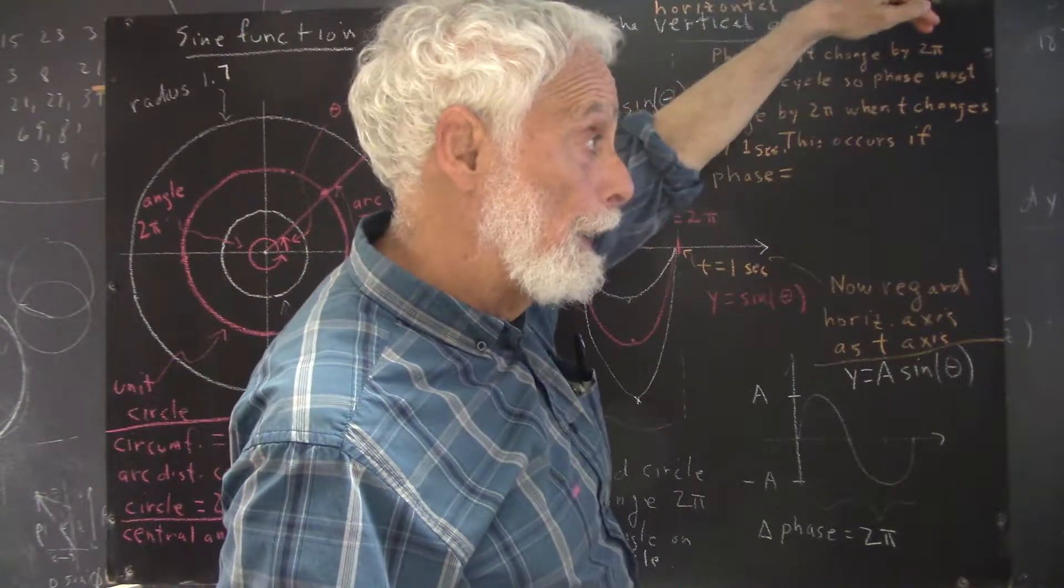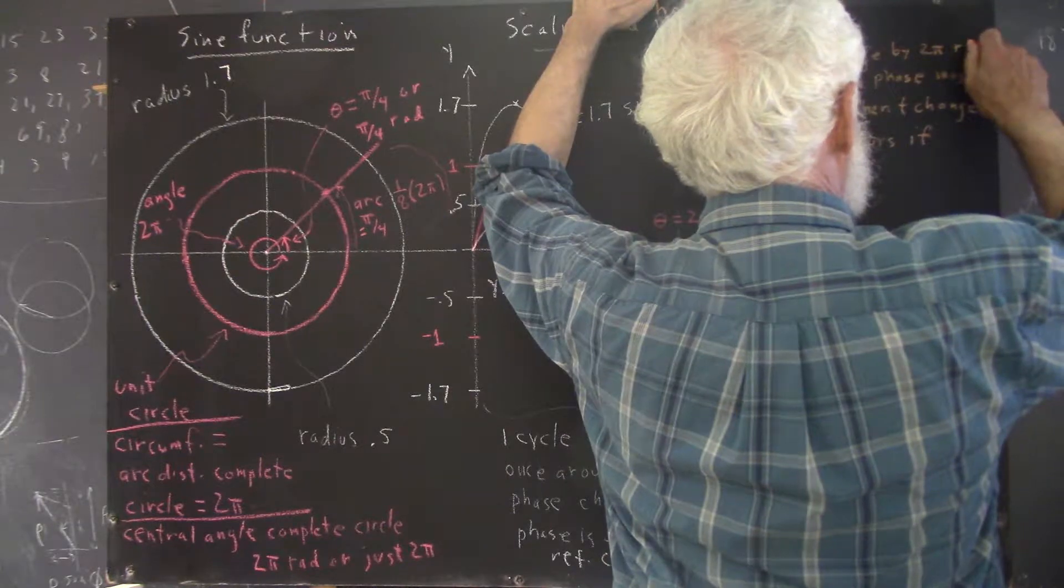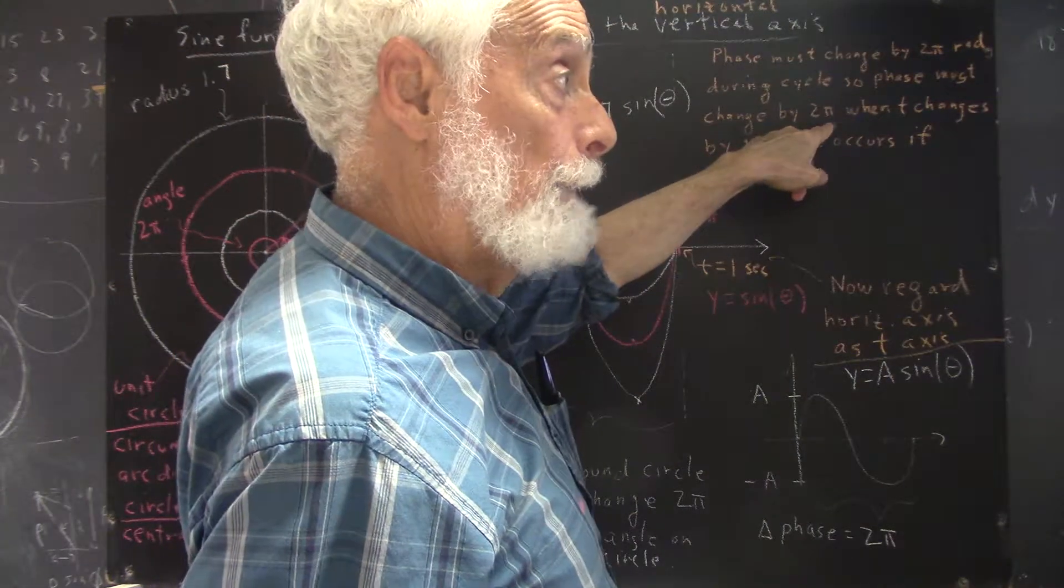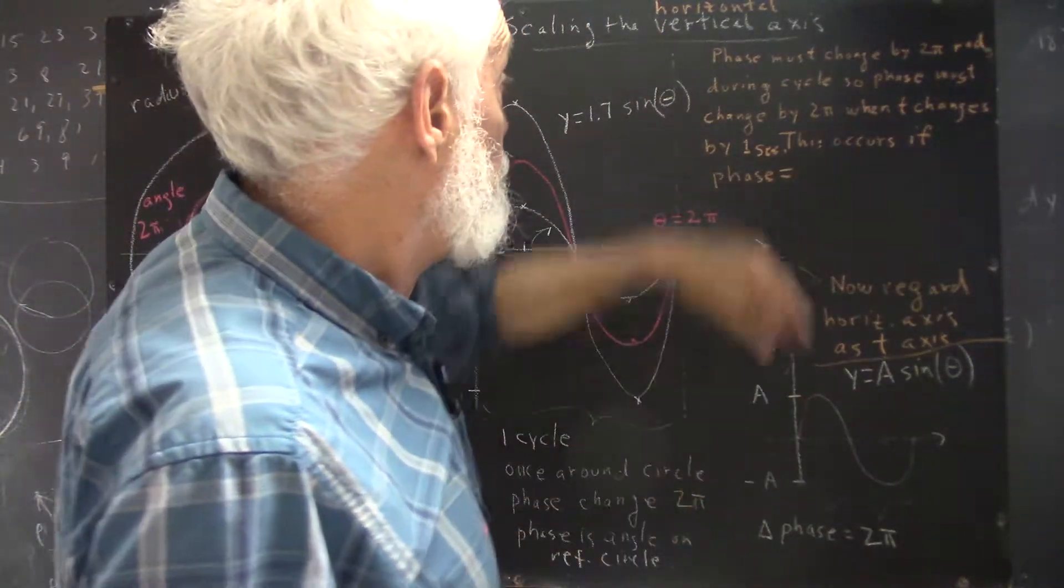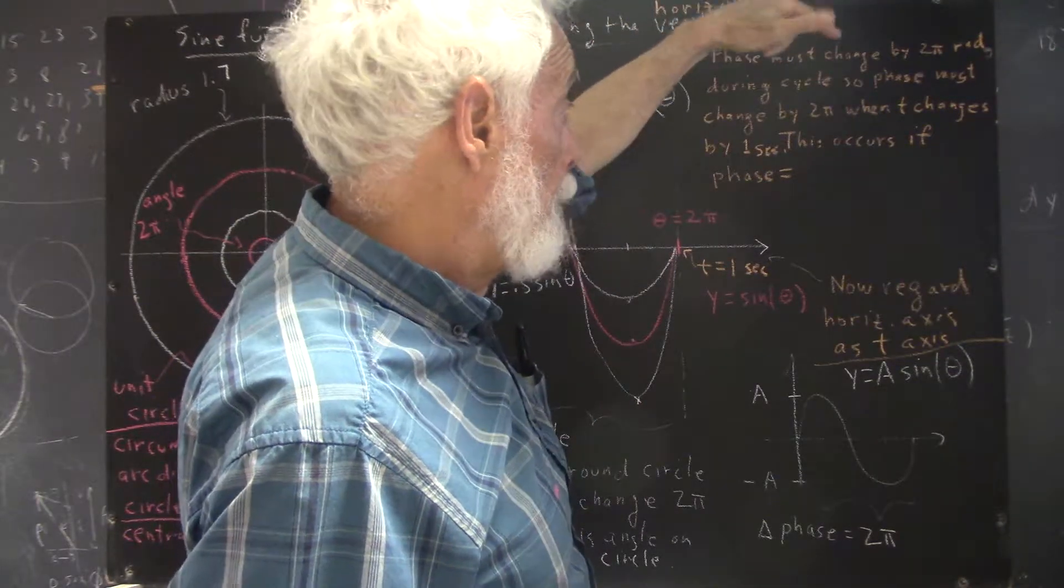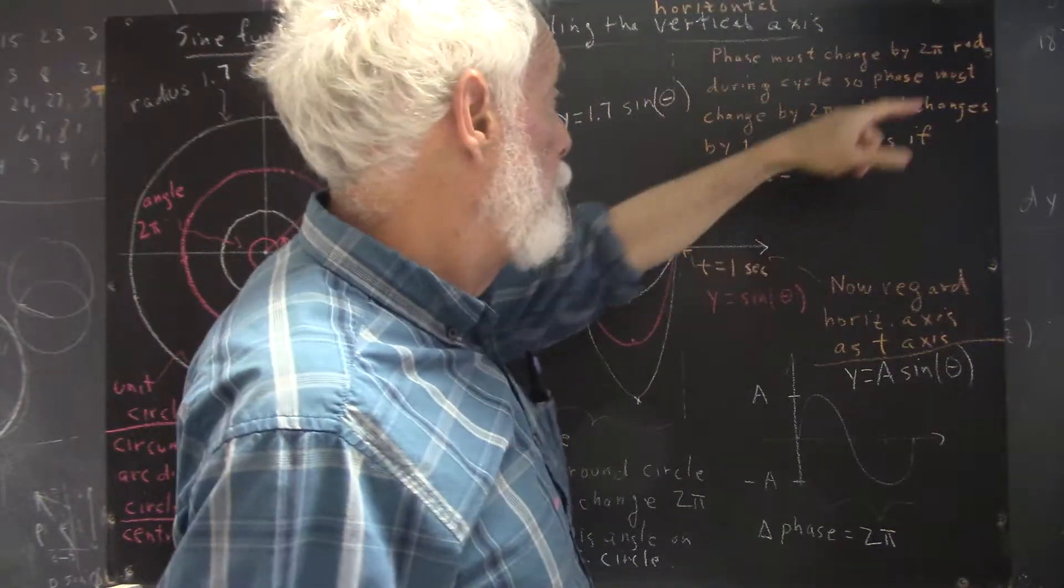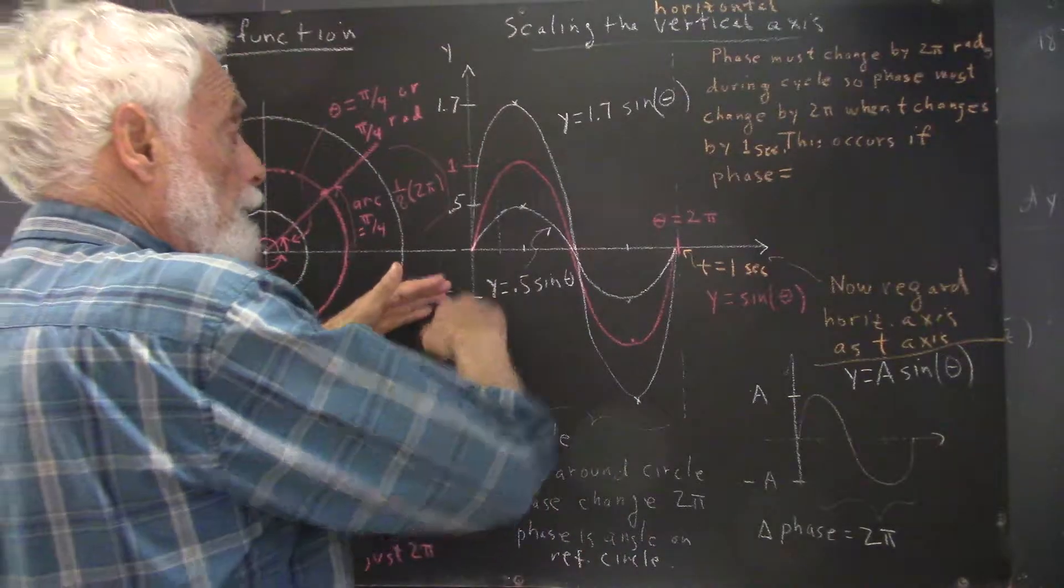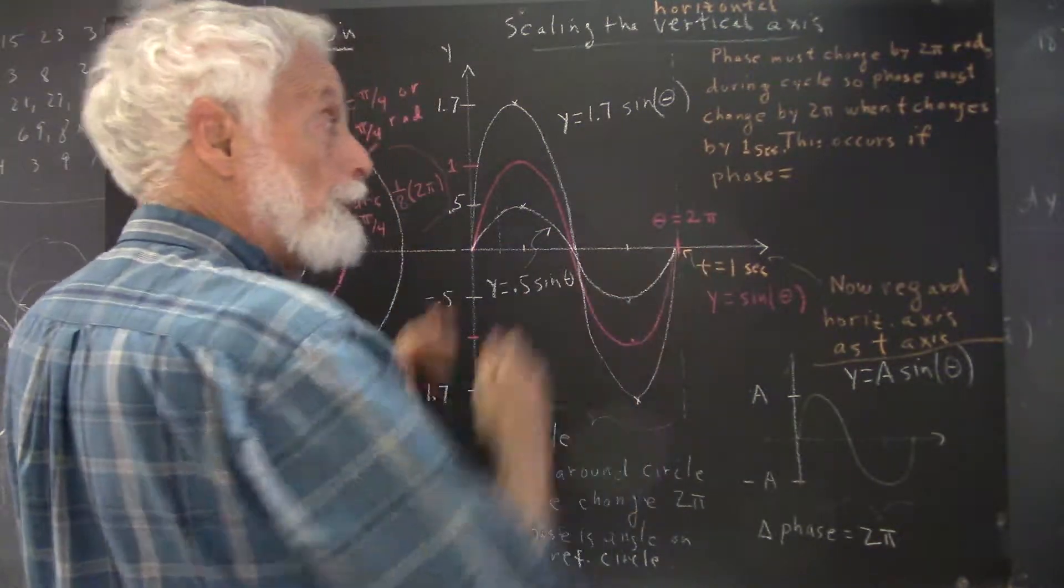We summarize our situation by saying the phase has to change by 2π, or 2π radians, during a cycle. The phase must change by 2π radians when t changes by 1 second, because we have a phase change of 2π radians during a cycle and a change in t of 1 second.